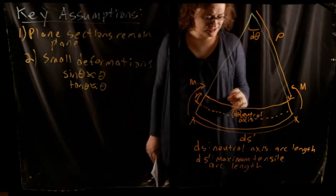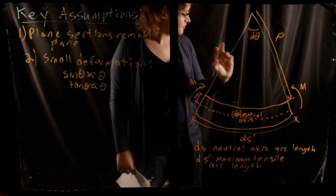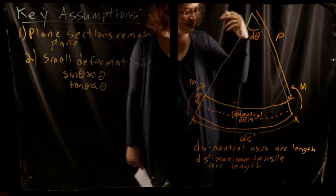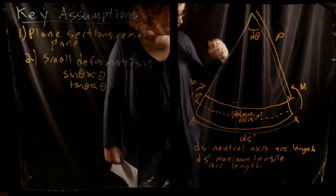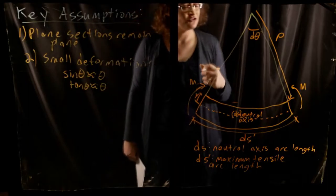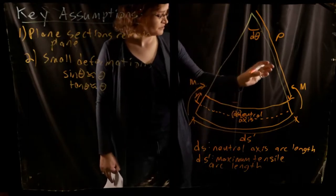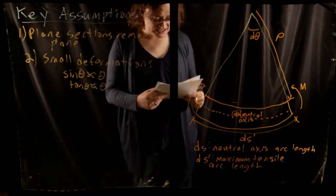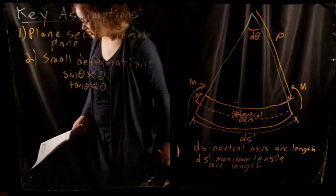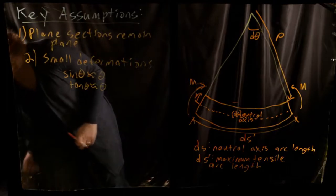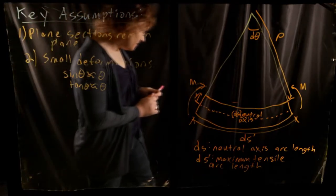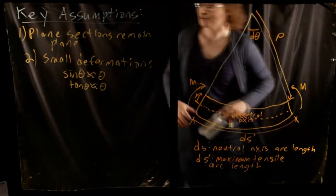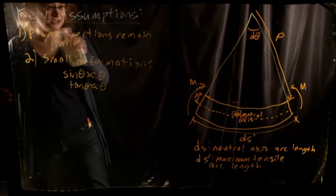When we bend this beam, we're going to put the top fibers into compression and the bottom fibers into tension. I'm referring to that maximum length in the tension section as ds prime, with the neutral axis — basically the undeformed length — as ds. Going back to mechanics, the definition of the neutral axis is that it is the location of neutral stress. In other words, at the neutral axis, we are undergoing neither compression nor tension, and so the strain and stress at that location are zero.